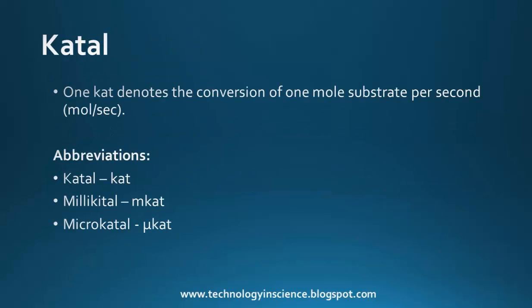Let's see what is the catal unit. In order to maintain uniformity in the expression of enzyme activities world over, the enzyme commission of IUB has suggested radical changes. A new unit, namely catal, abbreviated as cat, was introduced. One cat denotes the conversion of one mole of substrate per second, that is mole per second.